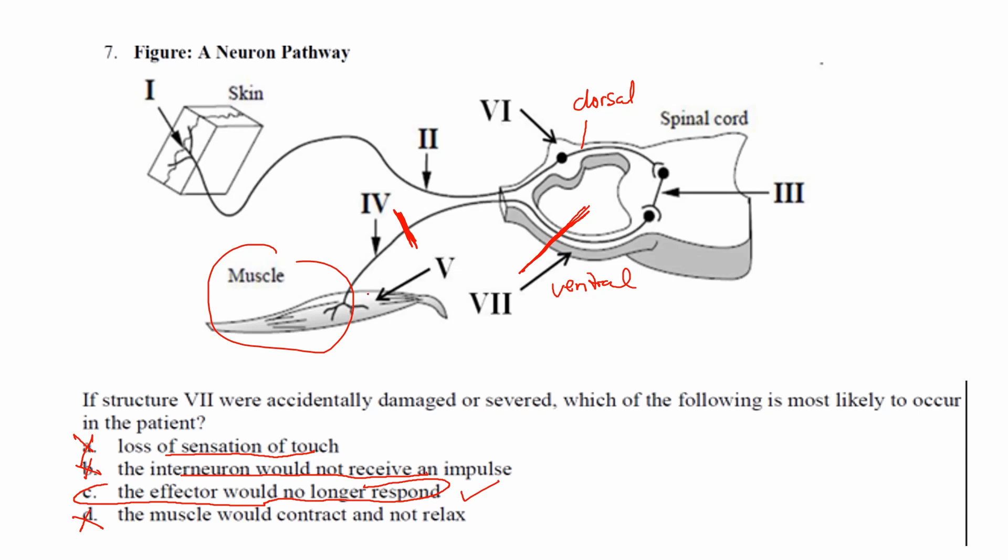Very typical question. Now again, it could be different if you had a question where this was severed or the dorsal nerve tract was severed. That message or that sensation of touch would never be able to be interpreted by the spinal cord, so you would never get a message there and you'd lose that sensation.